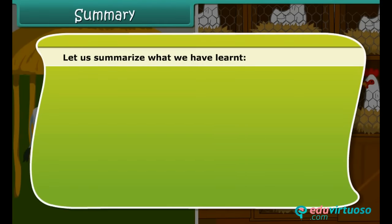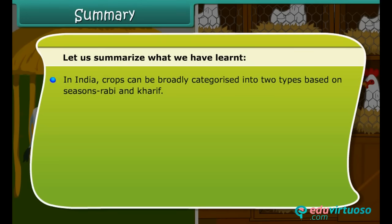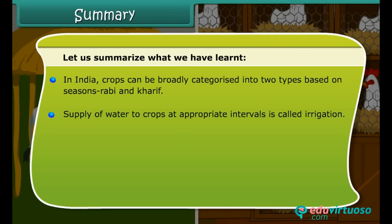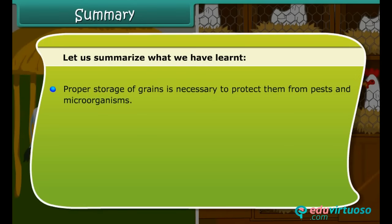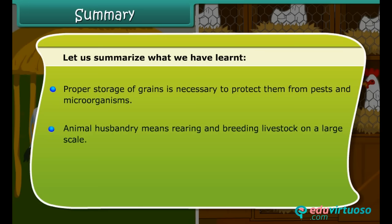Now let us summarize what we have learned so far. In India, crops can be broadly categorized into two types based on the seasons they are grown in — Rabi and Kharif. Supply of water to crops at appropriate intervals is called irrigation. Harvesting is the cutting of the mature crop manually or by machines. Separation of the grains from the chaff is called threshing. Proper storage of grains is necessary to protect them from pests and microorganisms. Animal husbandry means rearing and breeding livestock on a large scale.